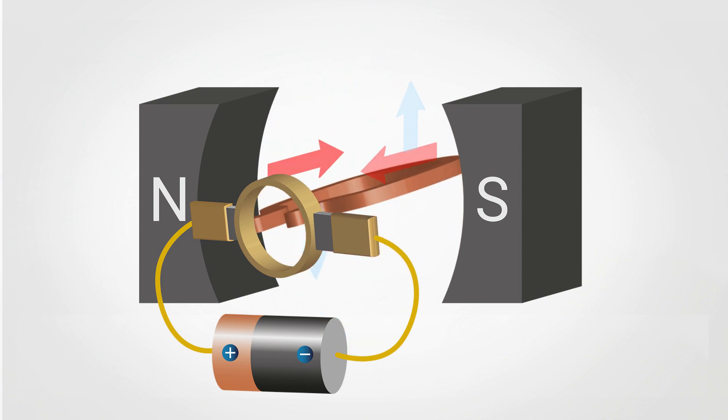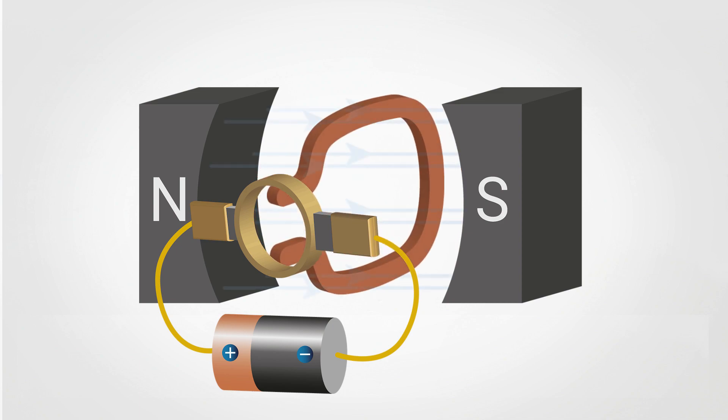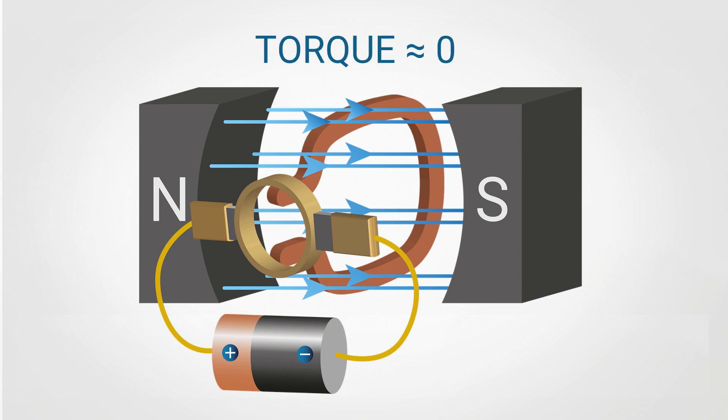In fact, we can notice a slowdown of the rotation when the coil is nearly perpendicular to the magnetic field flux. That's because in this position, the value of the torque action is near zero.